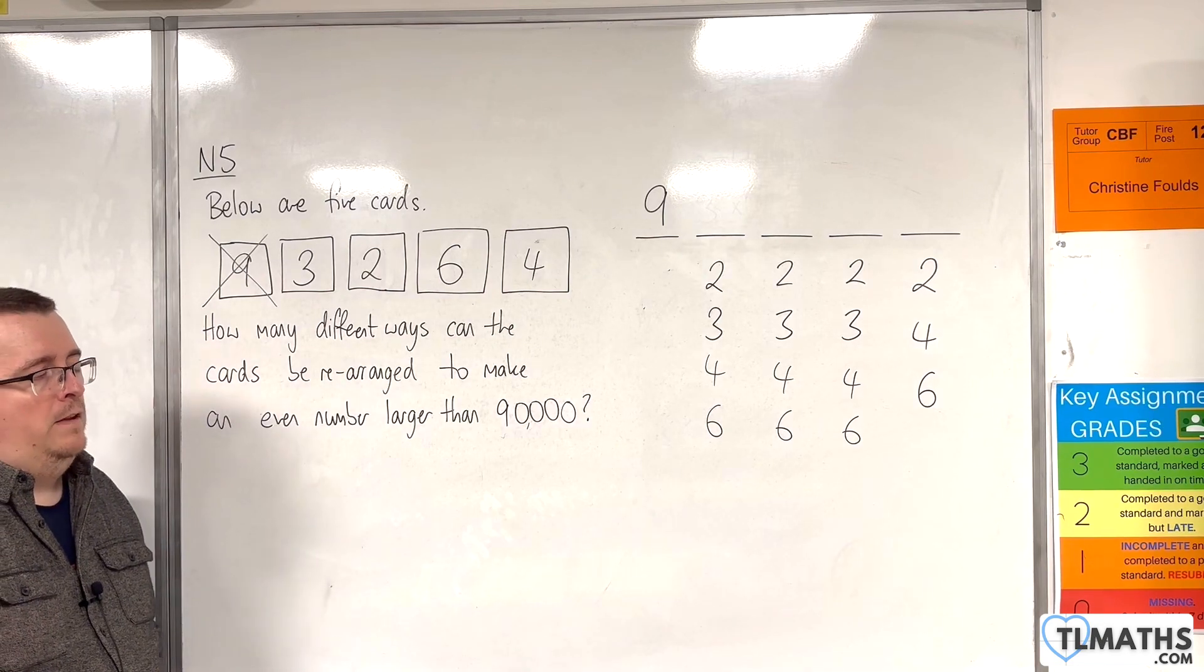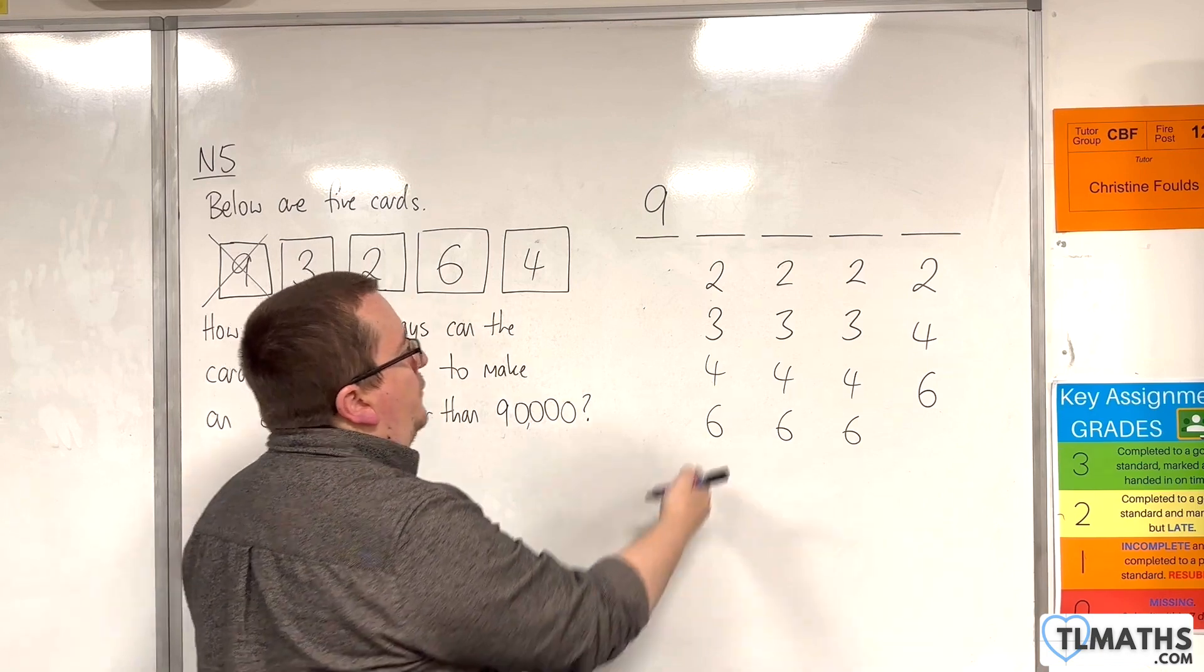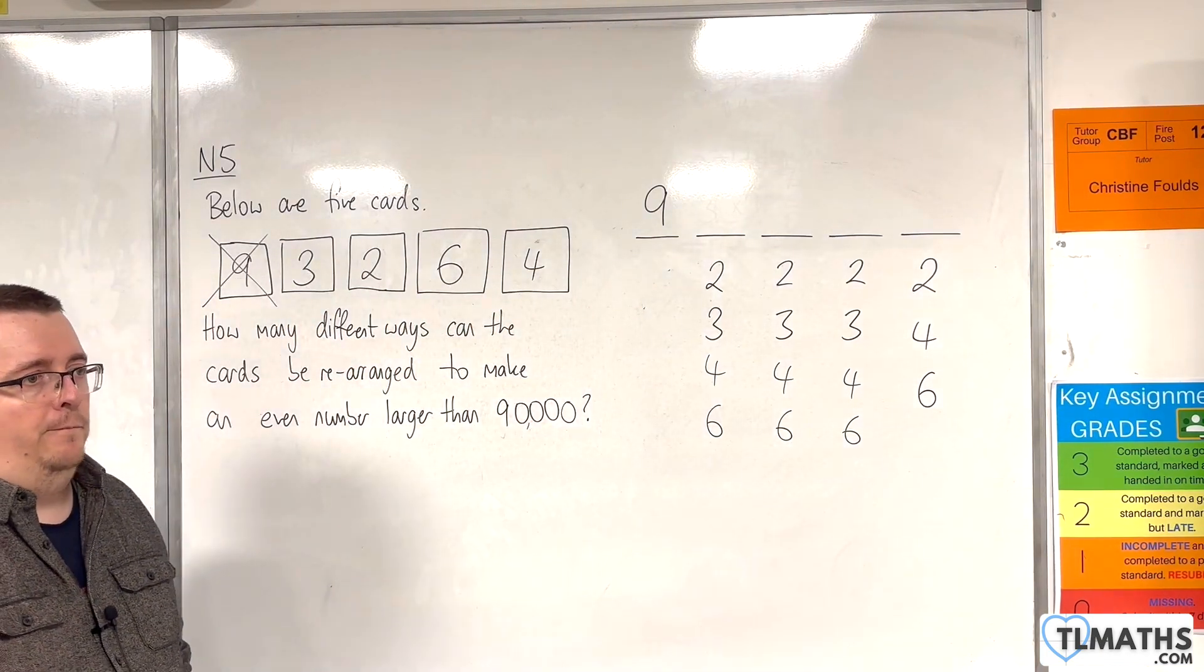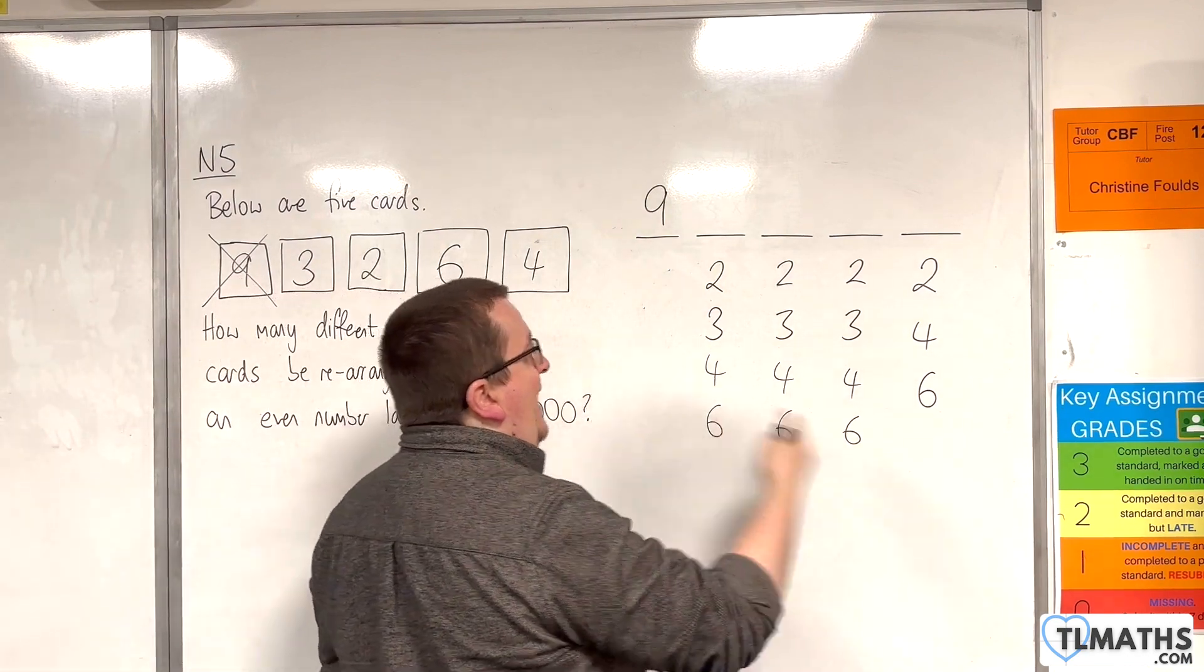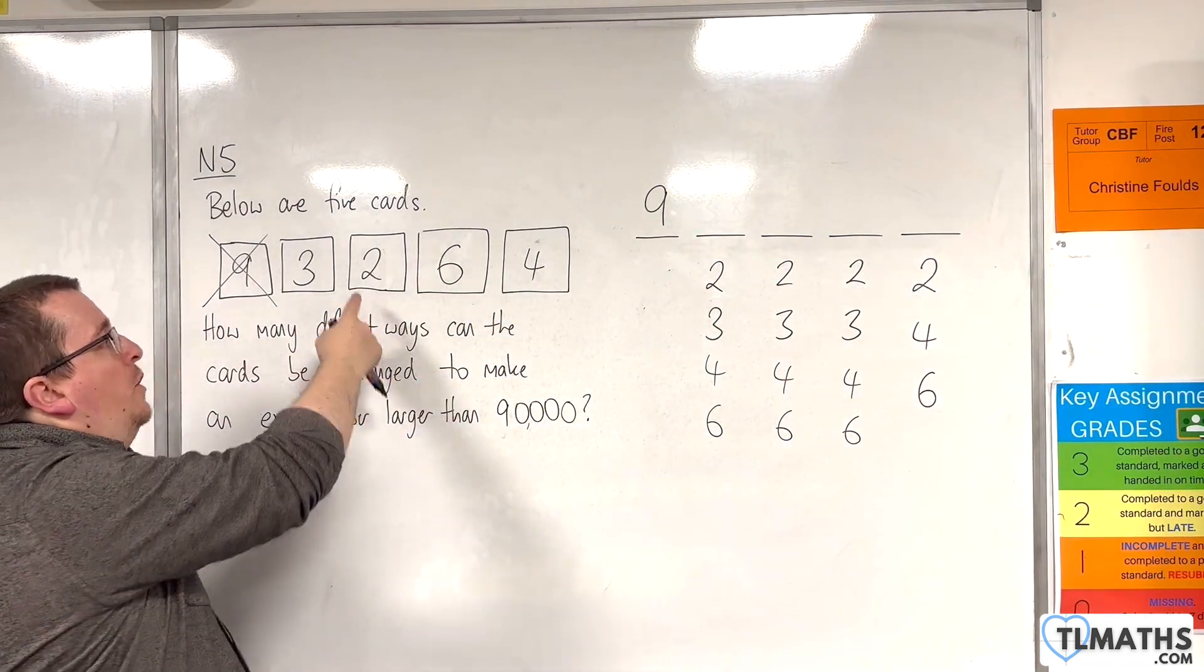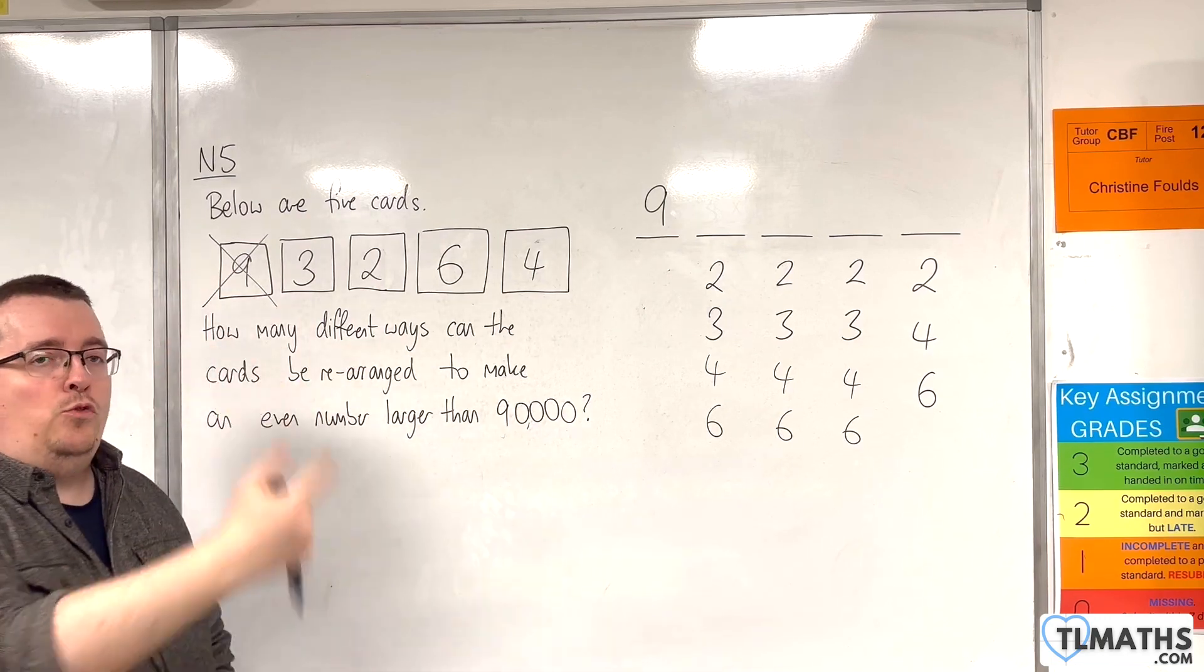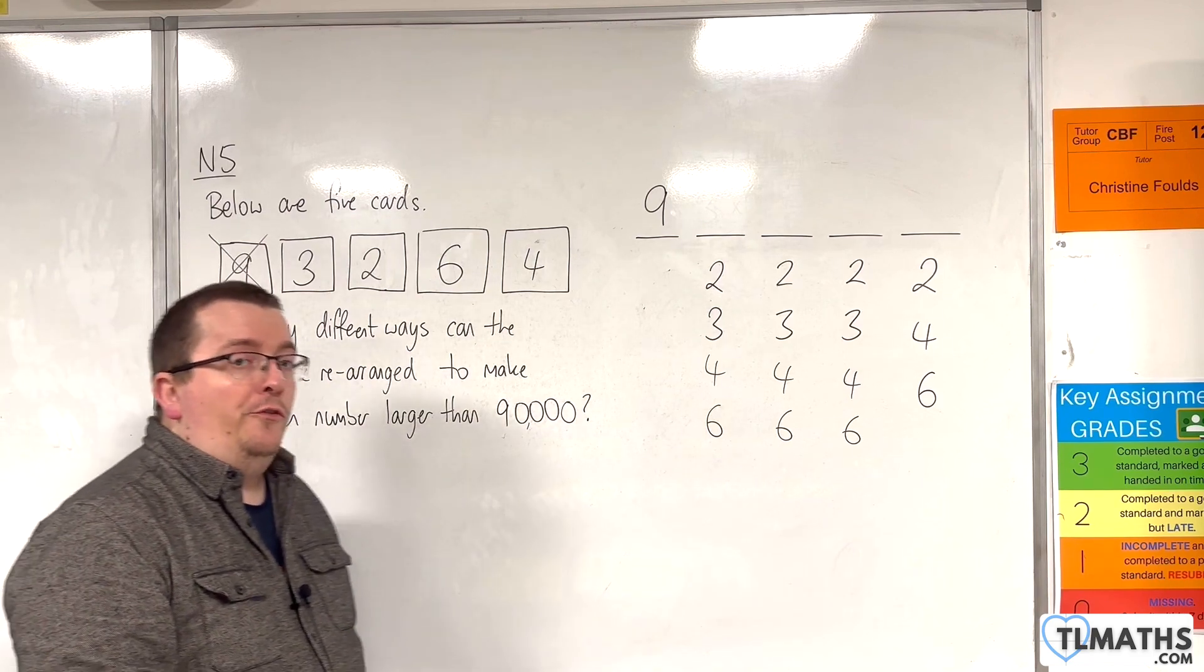Now, you might be thinking, well, okay, that's 4 times 4 times 4 times 3. But we've got to be very careful here. Because that would allow us to have 9, 2, 2, 2, 2. But we don't have 4 twos. We've only got the 1, 2. So each time one of these is picked, it takes away one of the other options. So that makes it a little bit more fiddly.